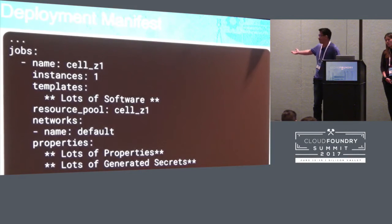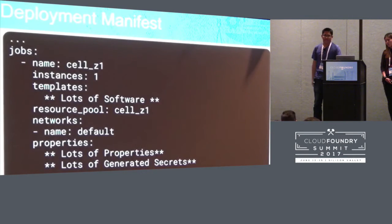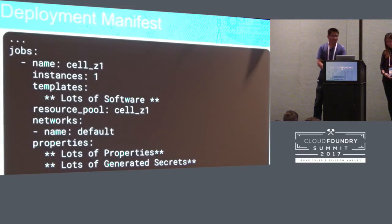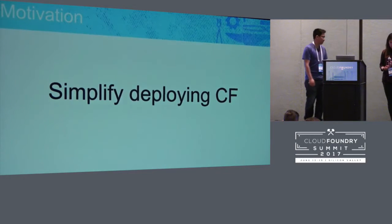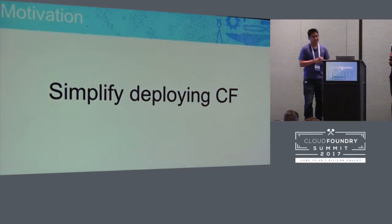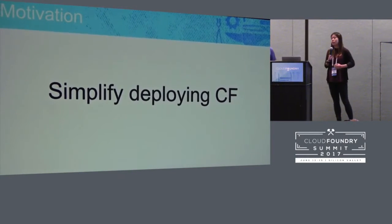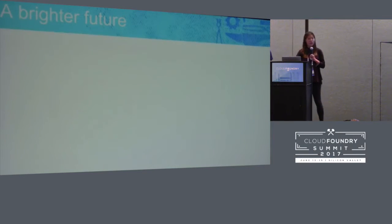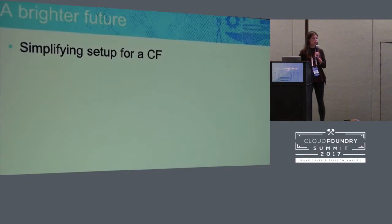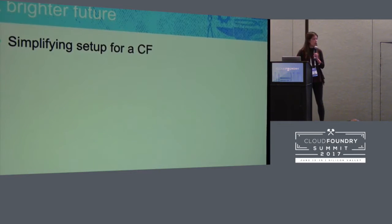Most of you know what a deployment manifest looks like. There are jobs, which are your VMs, and they usually have some software, which are your job templates, and then some configuration. So deploying Cloud Foundry can be a really arduous task. Our motivation is really to streamline the process and simplify how you deploy CF. For the past year, core Cloud Foundry teams have been working on creating tools that simplify setup for Cloud Foundry. So just a brief overview of each of these tools.